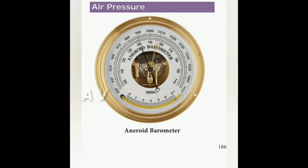The highest air pressure ever recorded at sea level was at Agata, Russia, on 31st December 1968 — the pressure was 1083.8 mb. The lowest pressure ever recorded was 870 mb, recorded in Typhoon Tip near Guam, Mariana Islands, in the Pacific Ocean in the year 1979.